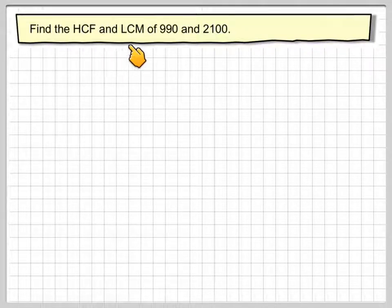Find the HCF and LCM of 990 and 2,100. HCF means highest common factor and LCM means lowest common multiple. We'll look at the actual meaning of this later.